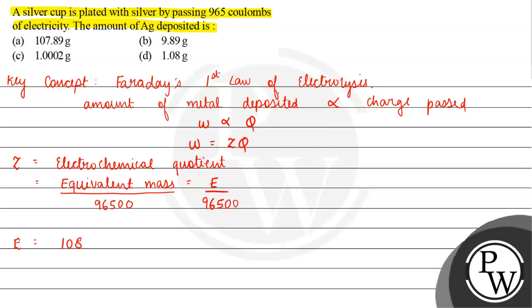E equals mass divided by valency factor, so E equals 108 divided by 1, the valency factor of silver. The formula is w equals E times q divided by 96500.